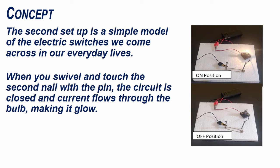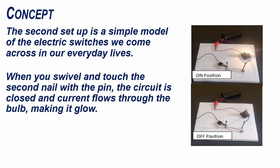The second setup is a simple model of the electric switches we come across in our everyday lives. When you swivel and touch the second nail with the safety pin, the circuit is closed and current flows through the bulb making it glow. Swiveling the safety pin away from the second nail makes the bulb stop glowing. This is because the circuit is now open and current is not flowing through the open circuit.